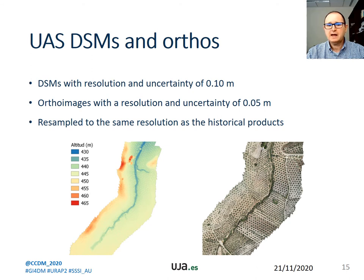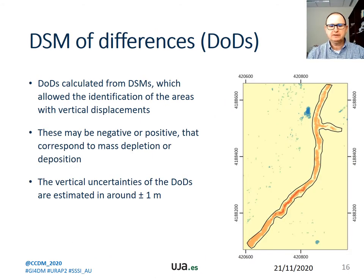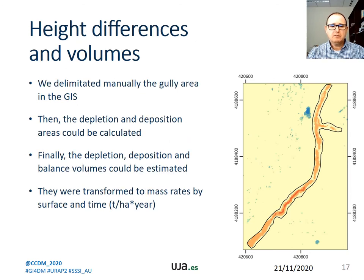Both products are resampled to the same resolution as the historical products. The calculation of differential models from DSMs allows the detection of areas that undergo vertical displacements, which may be negative or positive, corresponding to mass depletion or deposition respectively. The vertical uncertainties of the differential models are estimated at around 1 meter. From these differential models, we delimited manually the gully area in GIS. The depletion and deposition areas could be calculated as the average balance of height differences, and depletion, deposition and balance volumes were estimated and transformed to mass rates by surface area and time.